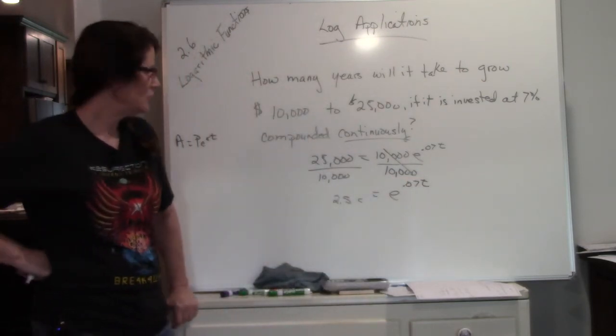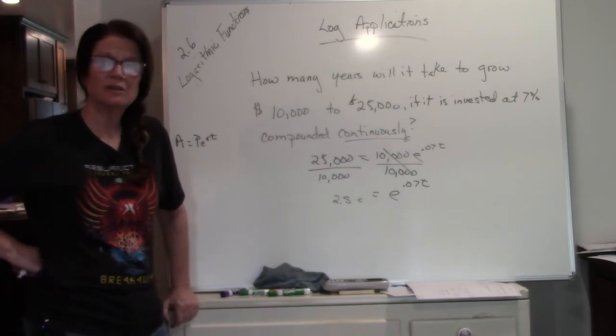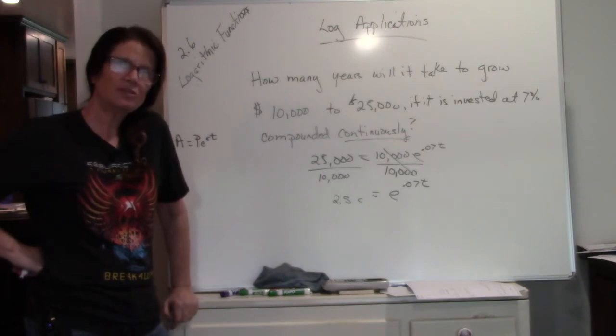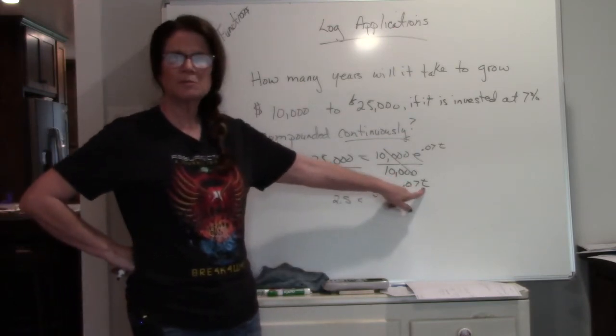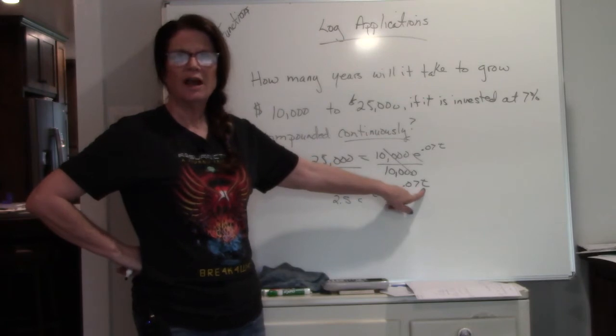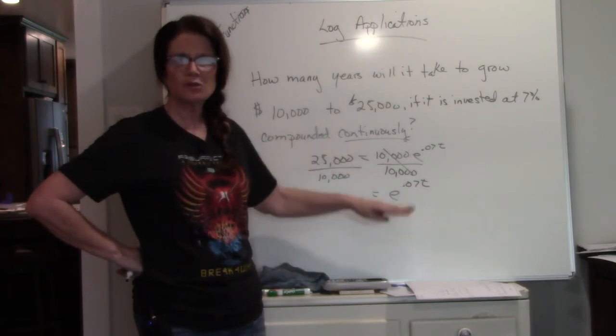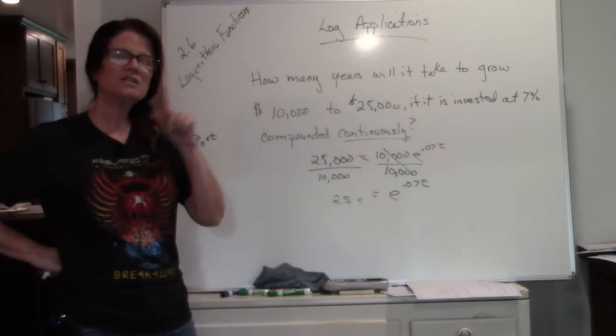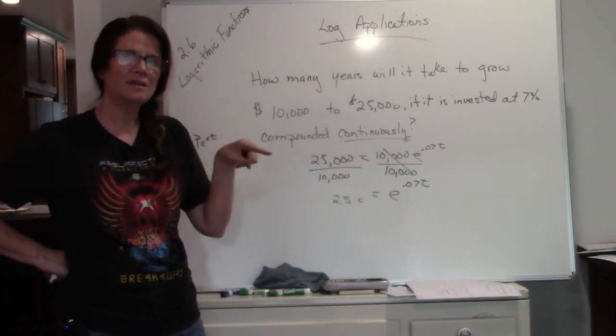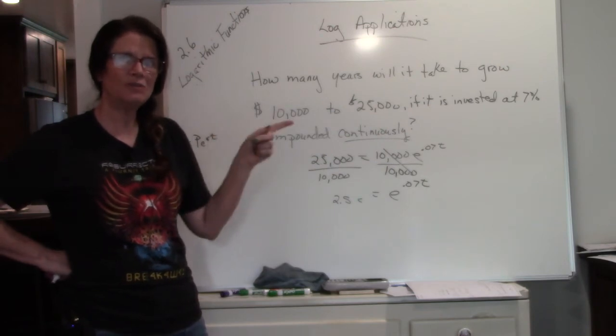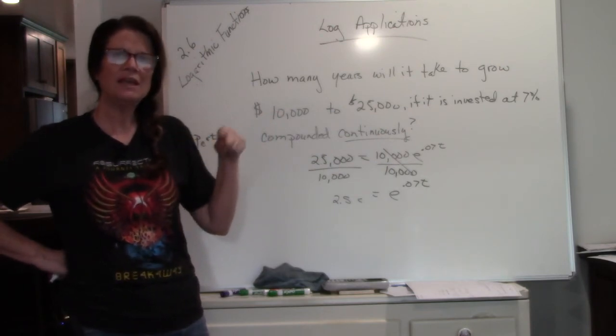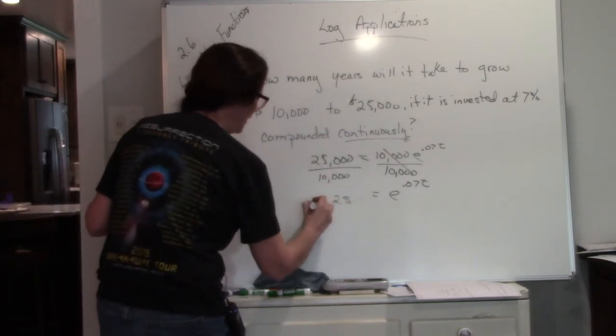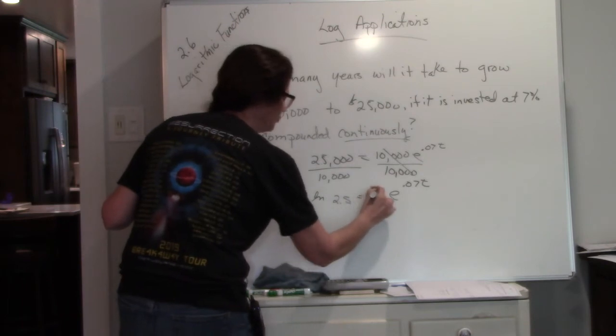So now I have an unknown. My E is by itself. I have an unknown in my exponent position. So you have to think to yourself, I can't solve it with an exponent as the unknown. I can only solve it when I have a straight equation. So I want to get rid of the E. So what is the function that undoes or is the inverse of E? Well, the inverse of E is the natural log. So what you're going to do is you're going to LN both sides.